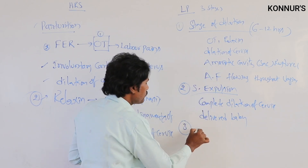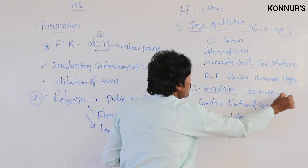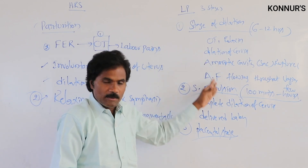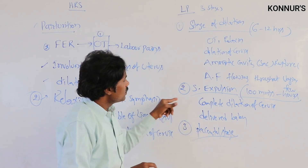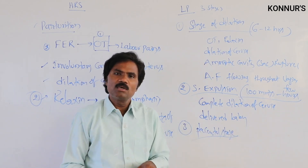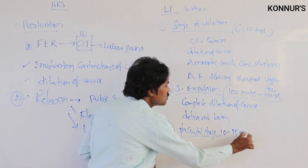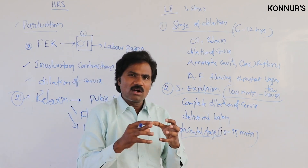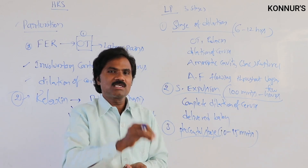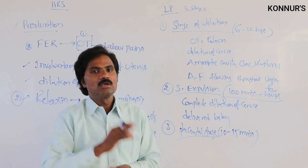The third stage is the placental stage, lasting a minimum of about 10 to 15 minutes up to a few hours. After delivery of the baby, due to forcible contraction of the uterus, the placenta is peeled off and separated, coming out along with parts of the fetal membranes and uterine tissue.